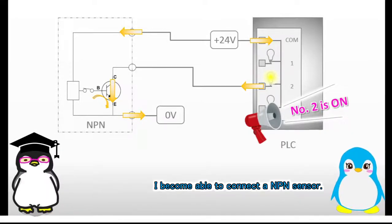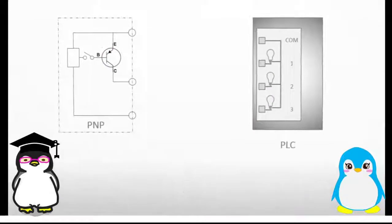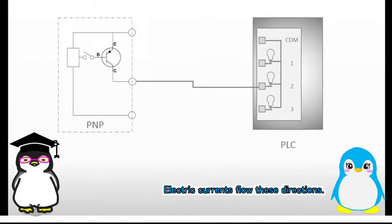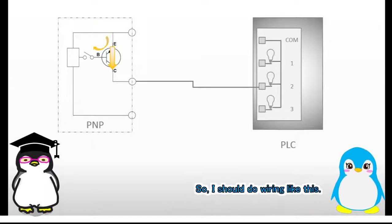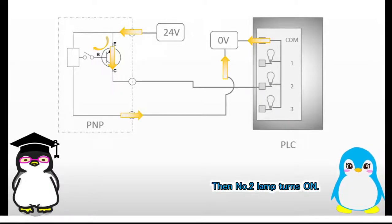I become able to connect an NPN sensor. Can I try to connect a PNP sensor? Yes, of course. A load is connected to a collector. Electric currents flow these directions. So I should do wiring like this. Then number 2 lamp turns on.